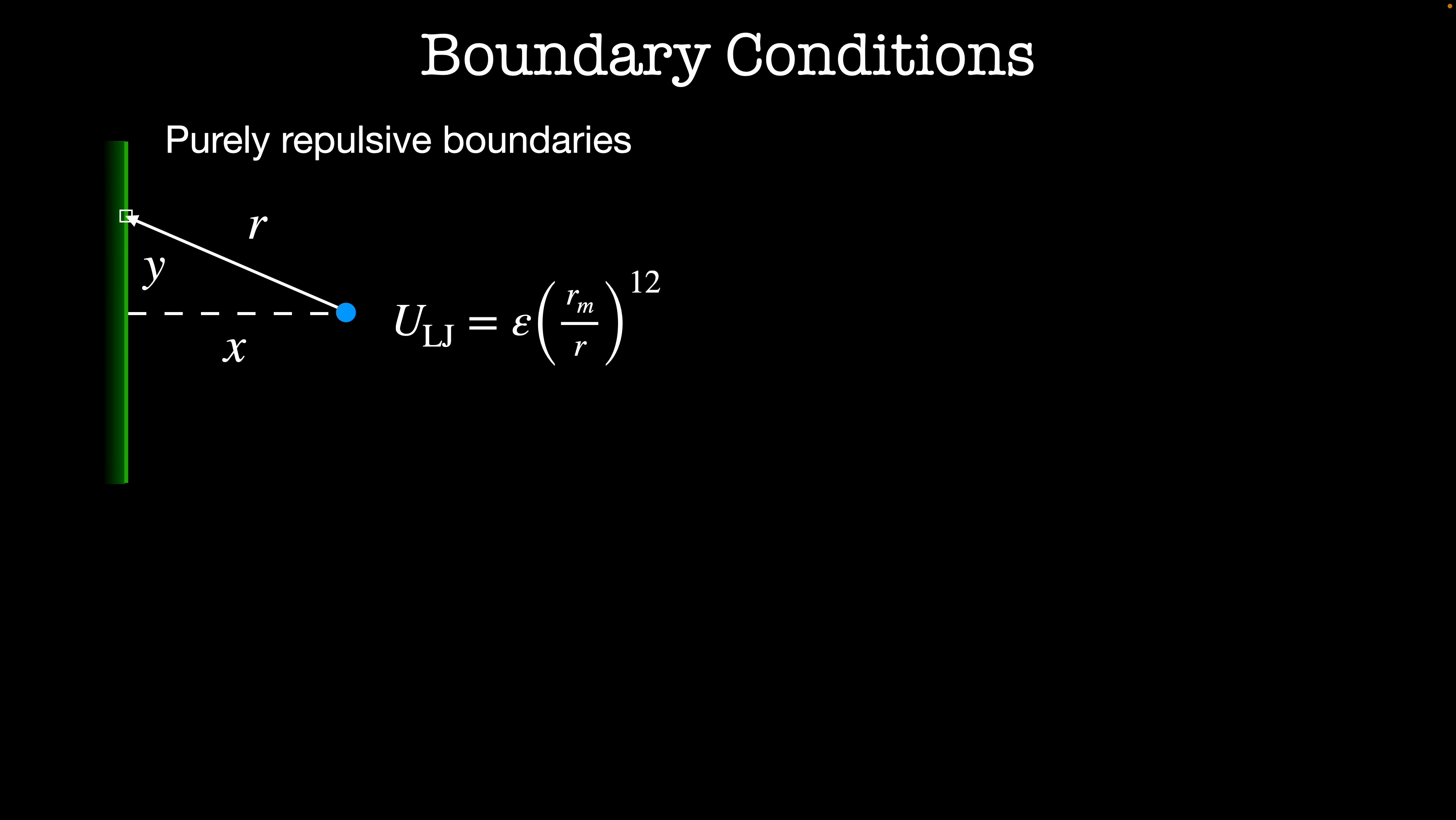Then we can place a test particle near the wall and calculate the energy at that point. I do this by integrating the interaction between my particle and an infinitesimal wall segment. First we can calculate the distance between them r in terms of x and y. My interaction energy is then epsilon times r_min to the 12th times the integral from minus infinity to infinity of dy divided by r to the 12th which is (x² + y²) to the sixth. This integral gives me 63π over 256 times epsilon r_min to the 12th divided by x to the 11th.